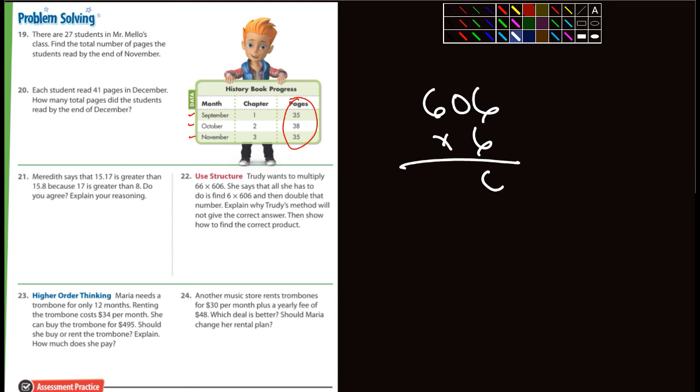That's going to be 36, put down the 3, put down the 6, carry the 3. 6 times 0 is 0 plus 3 is 3, and then 6 times 6 is 36. So it's going to be 3,636. That's 606 multiplied by 6. And so if she doubled it, then she would just add this together. 3,636. And then we're going to end up with 12, put down the 2, carry the 1, 6, 7, and then 12 again, carry the 1, so 7. So 7,272, which is what Trudy would have come up with.